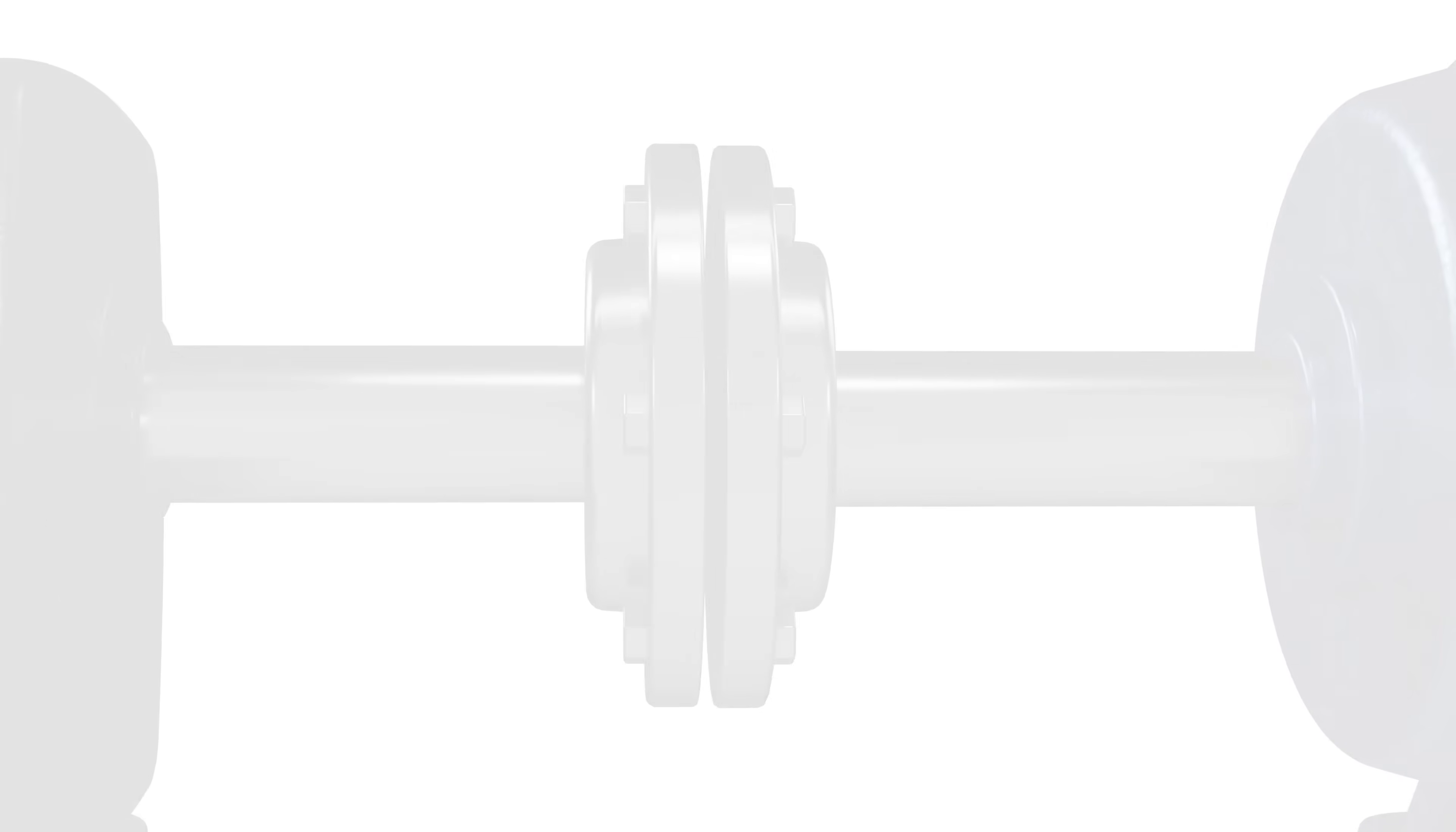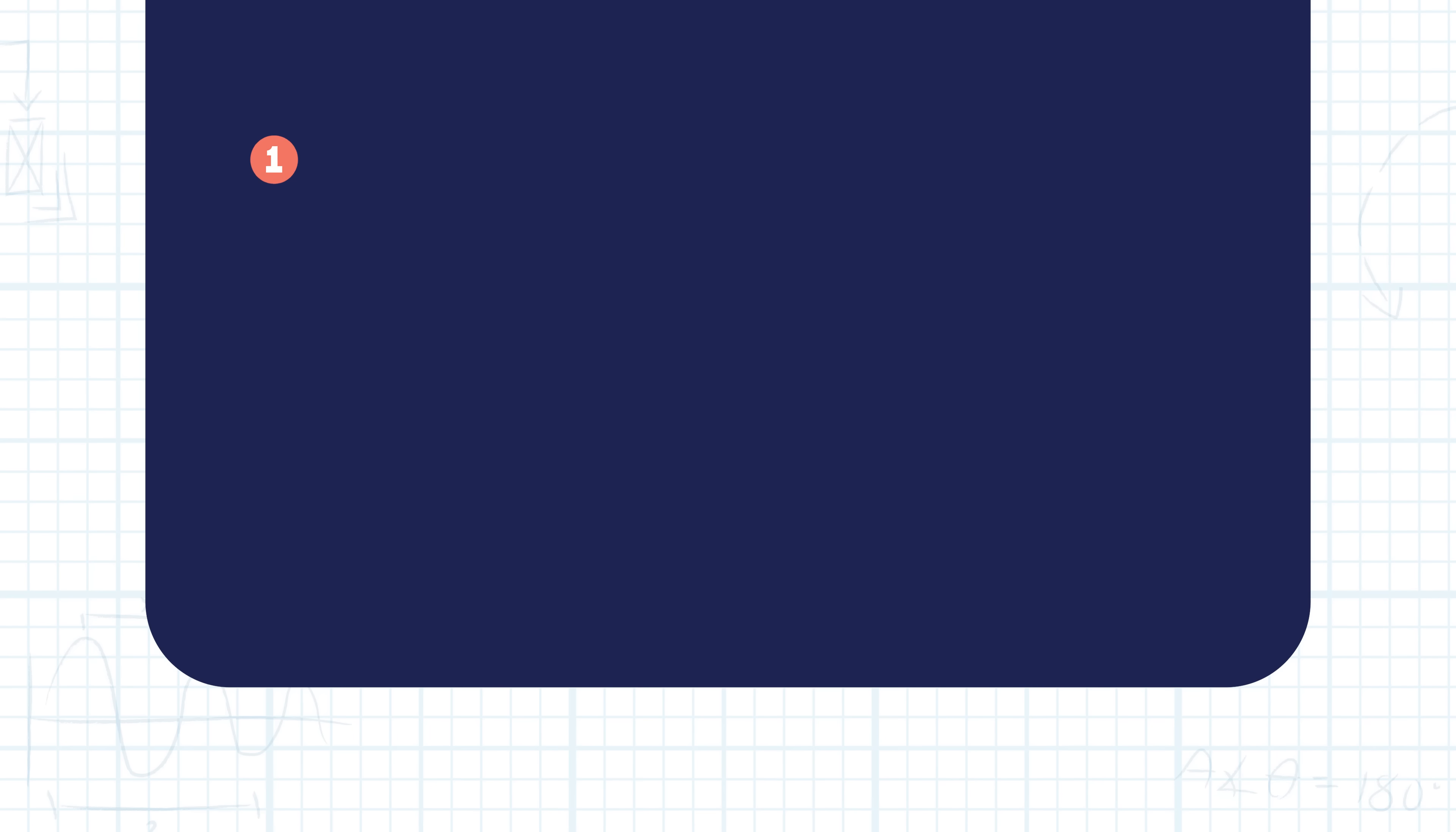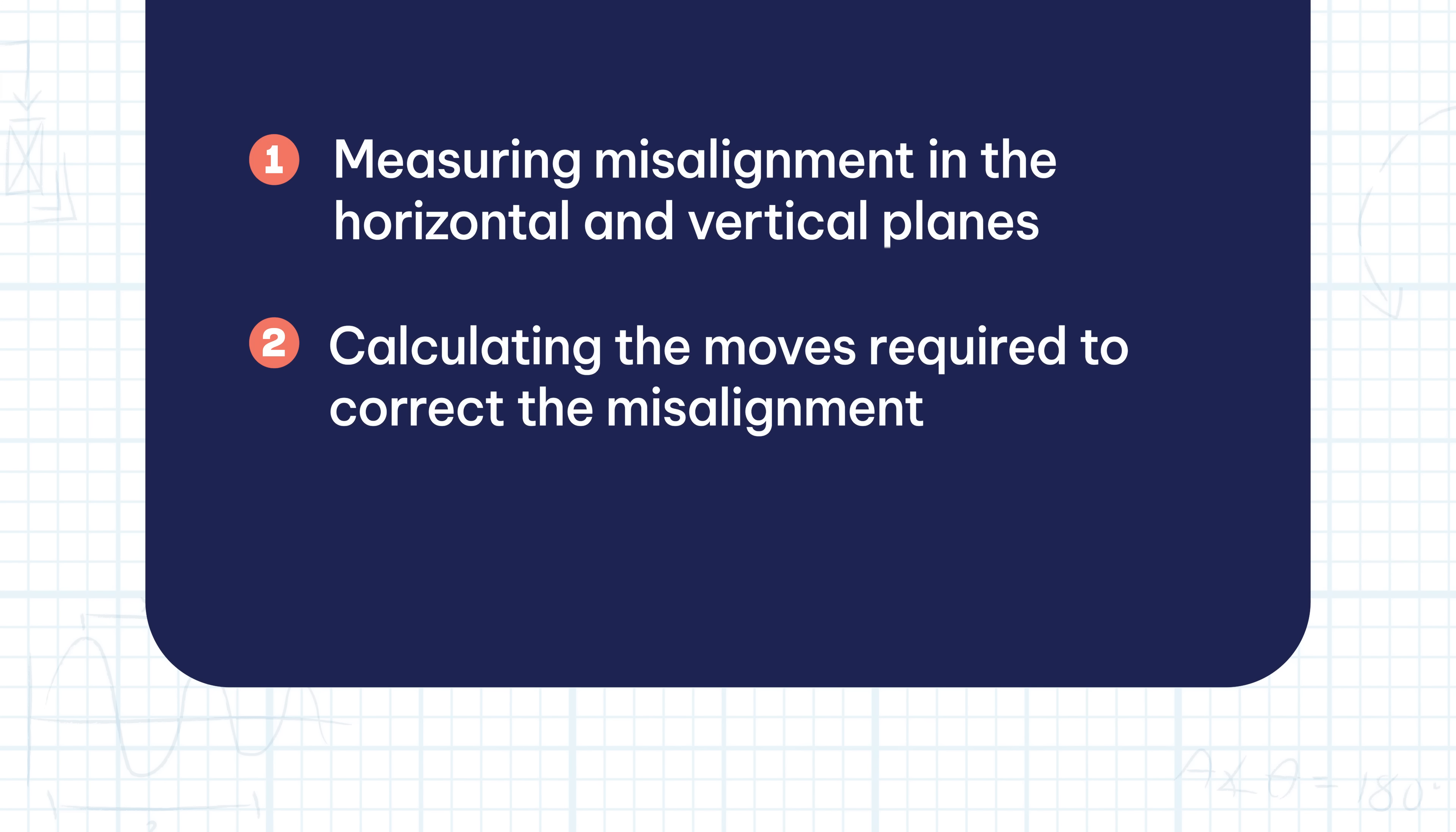The challenge of precision alignment can therefore be defined as: first, measuring misalignment in the horizontal and vertical planes; second, calculating the moves required to correct the misalignment; and finally, making the prescribed adjustments.